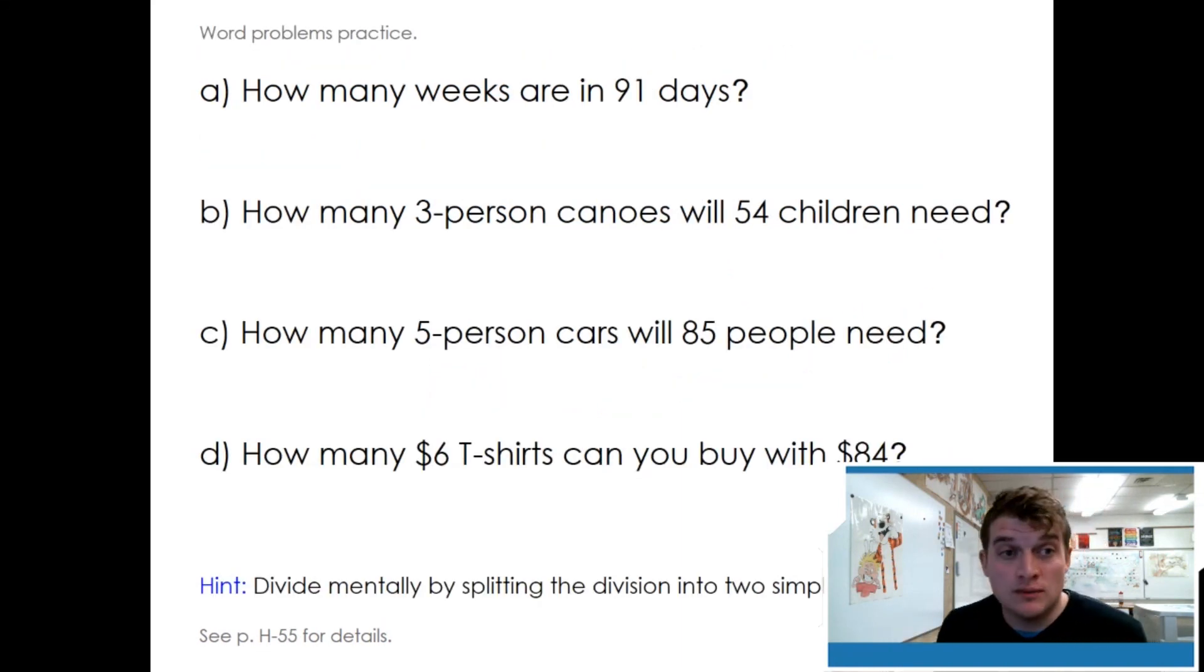We have a couple word problems to practice. How many weeks are there in ninety-one days? There's seven days in a week, so if we divide ninety-one by seven, we'll find our answer. Nine can be shared with seven once. One times seven is seven. We subtract. Get two tens. Bring down the ones. We get twenty-one. Twenty-one shared with seven. We can skip count. Seven, fourteen, twenty-one. My answer is three. Three times seven is twenty-one. We do not have a remainder. Try the next three by yourself.